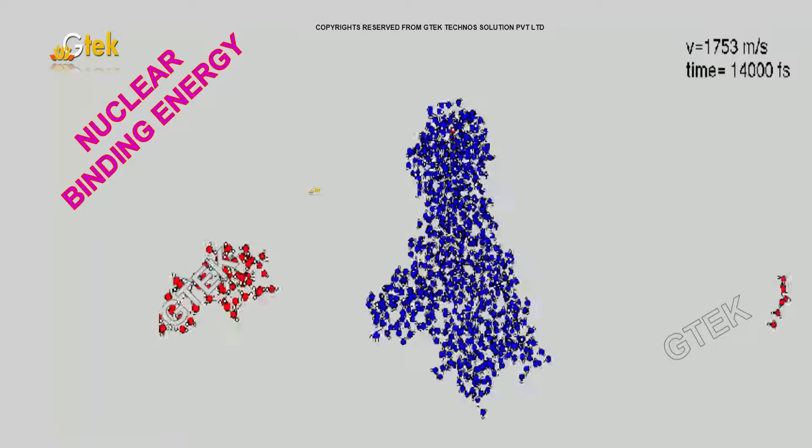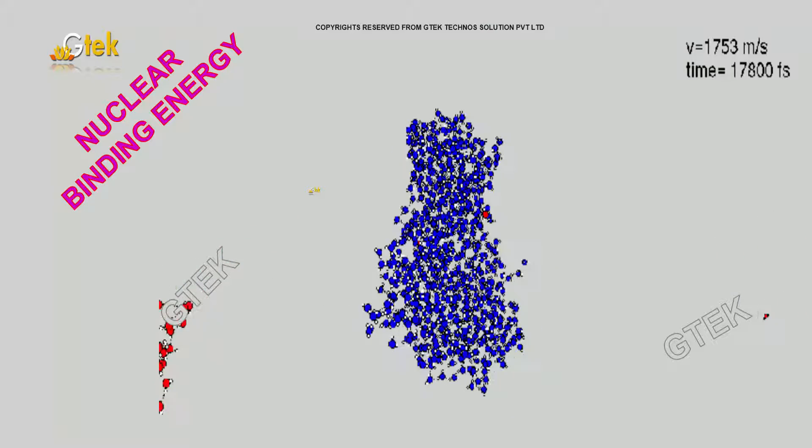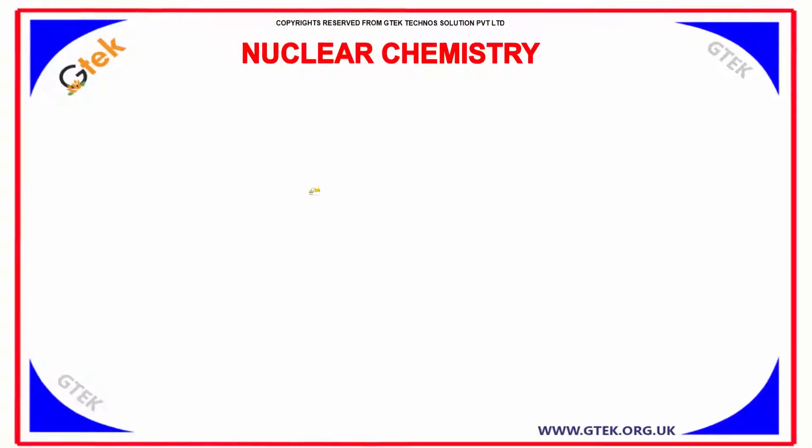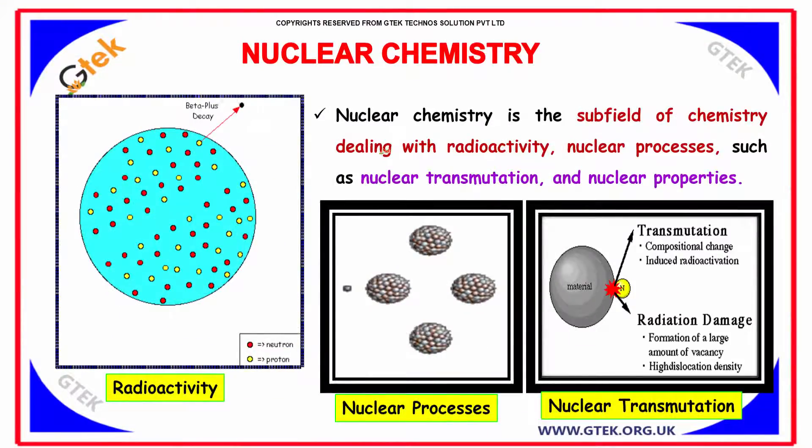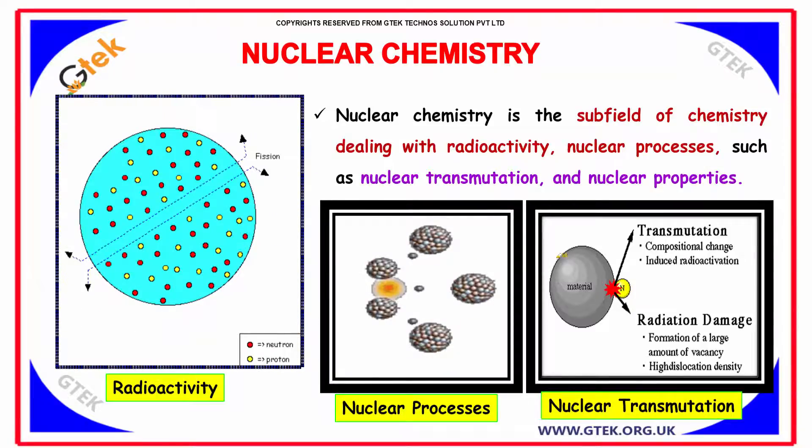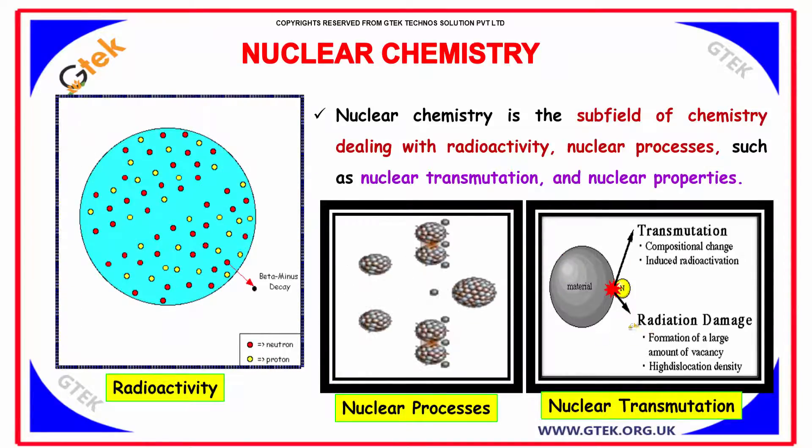Nuclear chemistry is the subfield of chemistry dealing with radioactivity, nuclear processes such as nuclear transmutations, and nuclear properties.